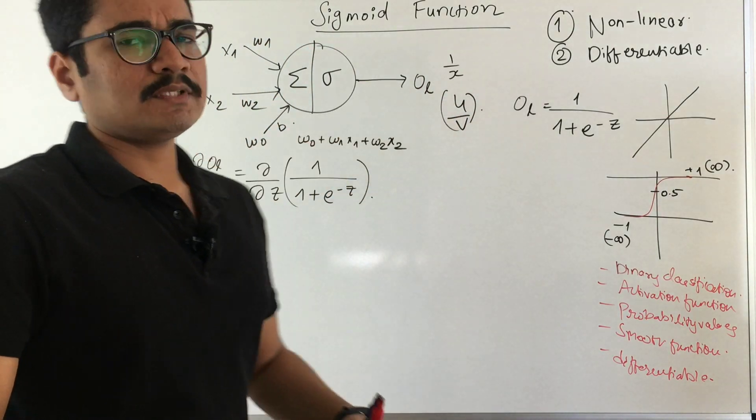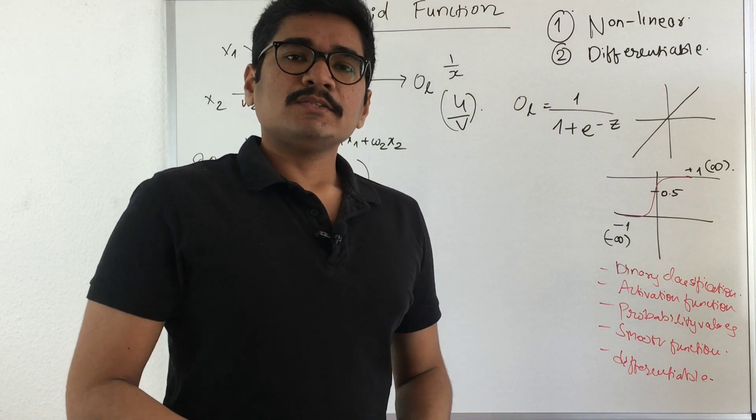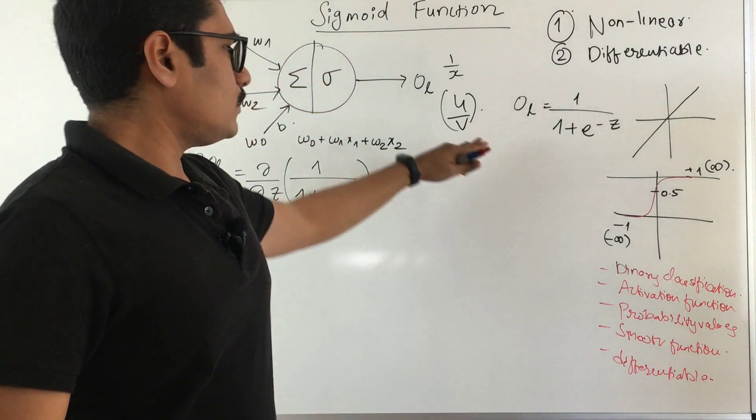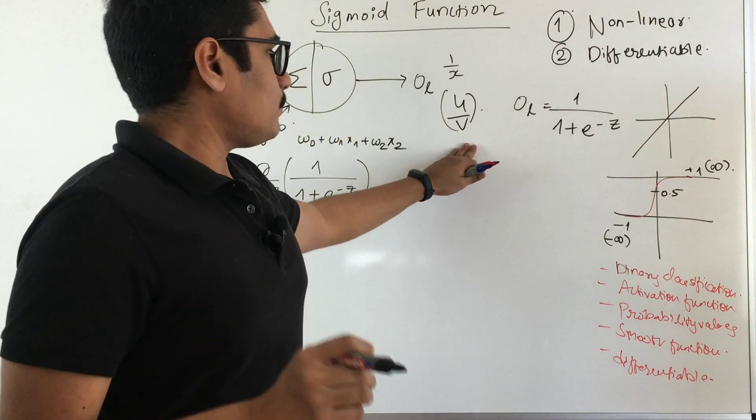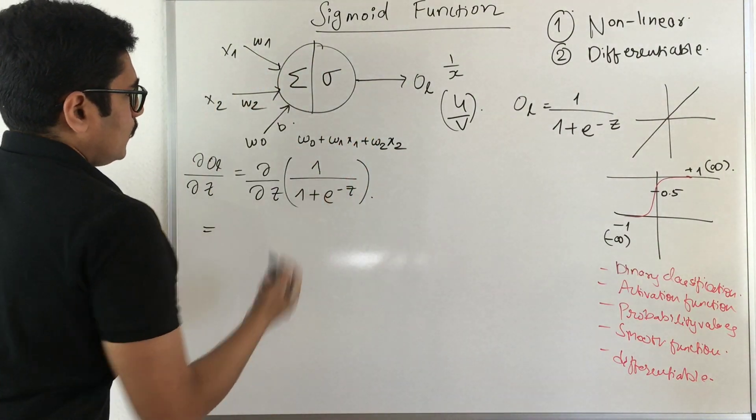Now after this we have something called tanh, hyperbolic tangent. In order to have a quick recap of that, we'll apply this particular method here.